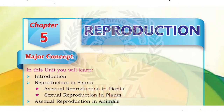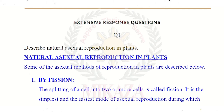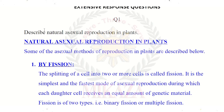Assalamu alaikum. We will be continuing chapter number 5, Reproduction. In this video, we will be covering Section C, extensive response questions with detailed answers. Question number one: describe natural sexual reproduction in plants.